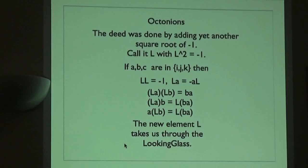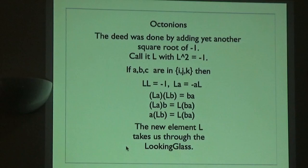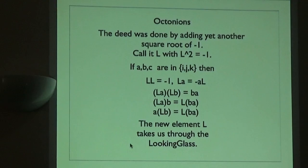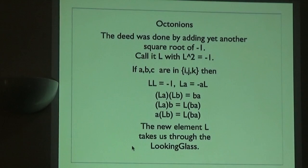So we'll do a little practice on the next slide. There's a new element, square root of minus one. Its interrelationship with the other guys is anti-commutes. And if you have a multiple product like LA times LB, then the L squared goes away and you have BA. Never mind that it's squared to minus one. If you have LA times B, it's L times BA. If you have A times LB, it's L times BA, and so on. And already you've seen some of the non-associativity if you try to look at that.